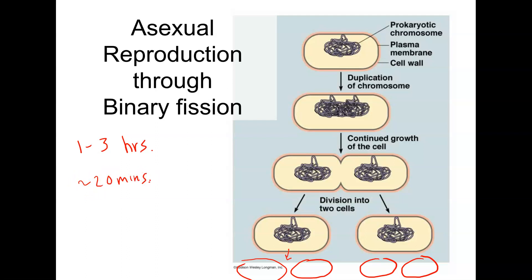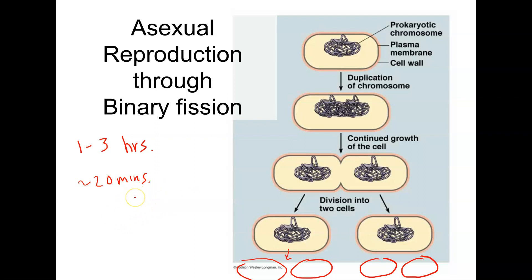When you think about that rate of reproduction, a single prokaryotic cell could give rise to a colony that weighs more than the Earth in only two days, if given uninterrupted favorable conditions, because that becomes exponential growth.